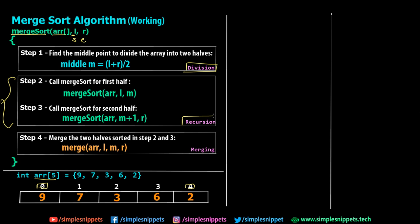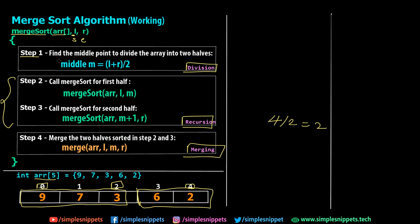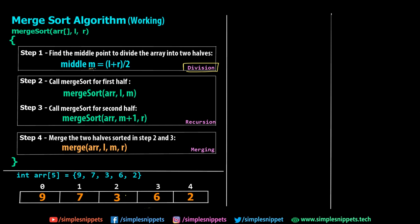Step 1 is finding the midpoint to divide the array into two halves, using the formula: middle = (L + R) / 2. For example, with L=0 and R=4, midpoint = (0 + 4) / 2 = 2. This is where we divide the array. With an odd-sized array of size 5, we get two unequal sub-arrays. So the first phase of division is done once we've found the midpoint.